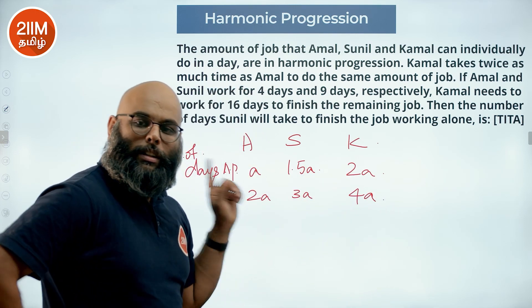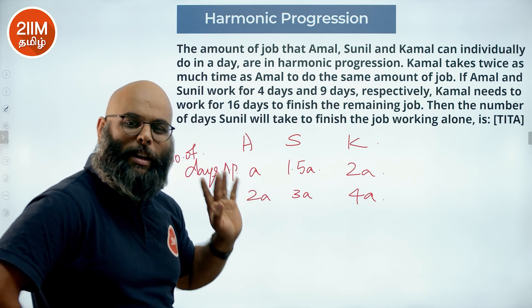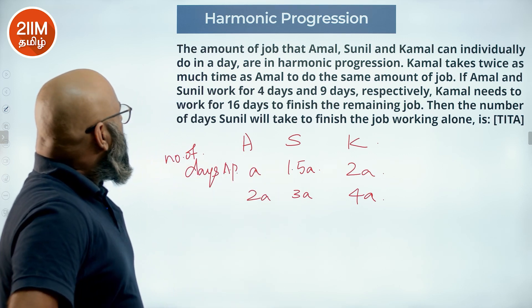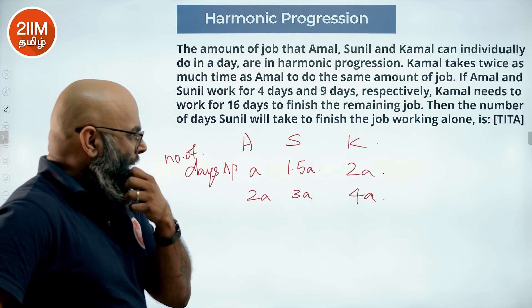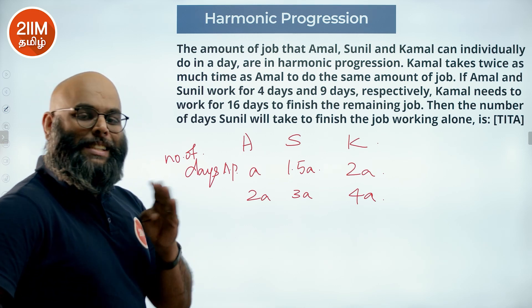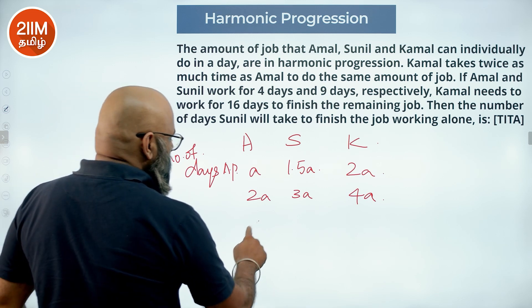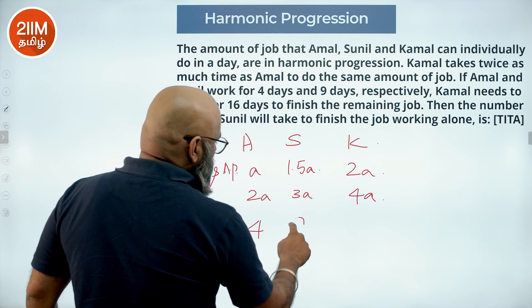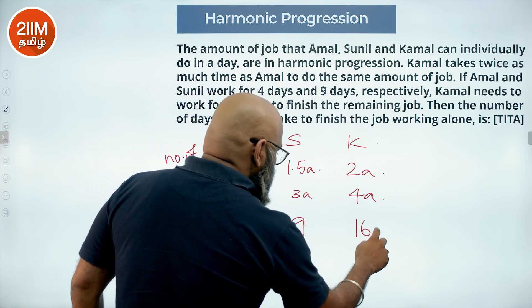So two and four days are the number of days. Working through the values: Amal takes 4 days worth of work, Sunil takes 9 days worth of work, and Kamal takes 16 days worth of work.